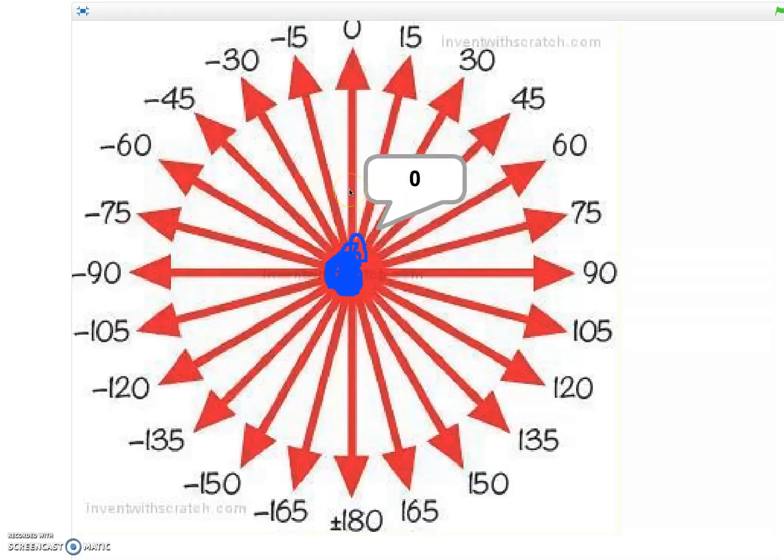All characters or sprites in Scratch have their own number direction. You can see that I've programmed a very simple Scratch project here to say point to mouse pointer.